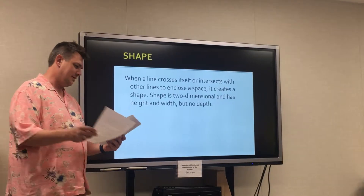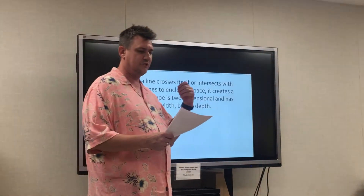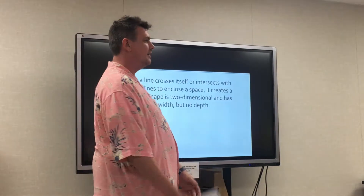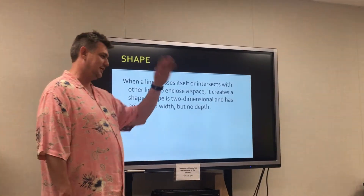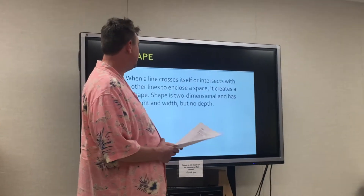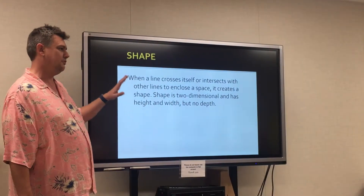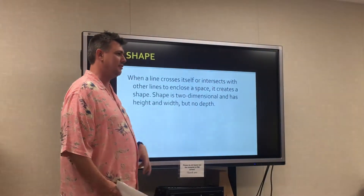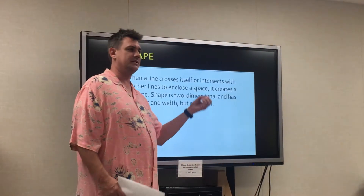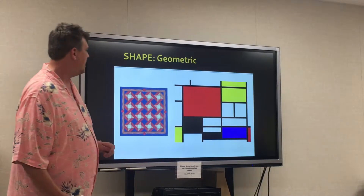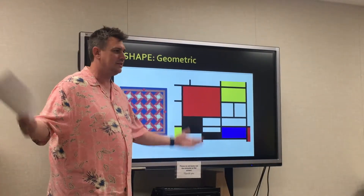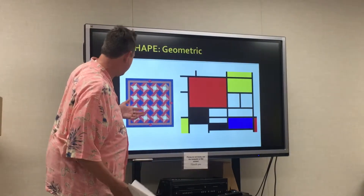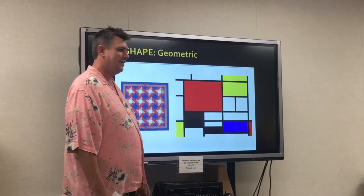Shape: when a line crosses itself or intersects with other lines to enclose space, it creates a shape. A shape is two-dimensional — it has a height and a width but no depth. If we're watching TV, it's all two-dimensional. In theater we're dealing with three-dimensional forms, so we have to be aware of either how to represent those, or how they are affected by the elements we put into the space. Geometric shapes — basic squares, rectangles, triangles, parallelograms, all of those fancy Greek names.